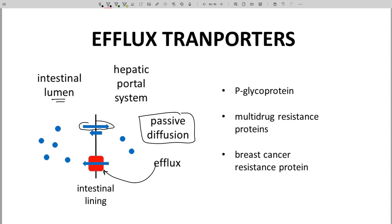Examples include PGP, P-glycoprotein, MDR, multidrug resistance proteins, and BCRP, breast cancer resistant protein.